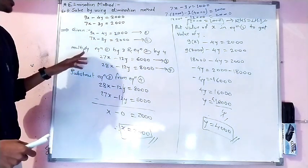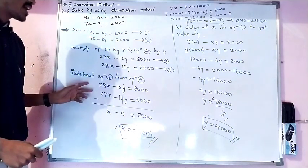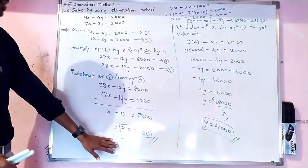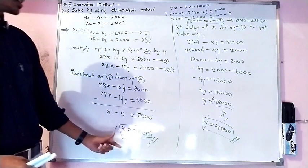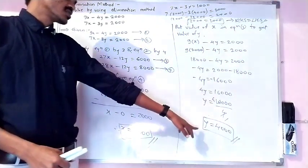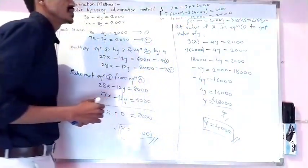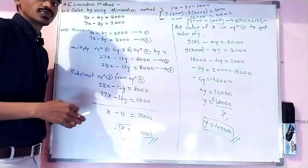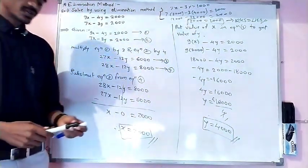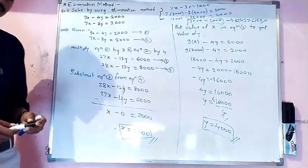To summarize the elimination method: multiply the equations with suitable numbers, then subtract or add according to the situation to eliminate one variable. Take that variable's value and substitute it into one of the original equations to find the other variable. Finally, do a cross-verification to confirm that the values of x and y are correct. I hope you understand the elimination method. Thank you.